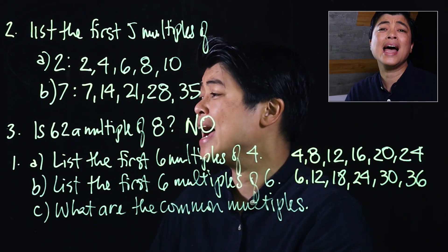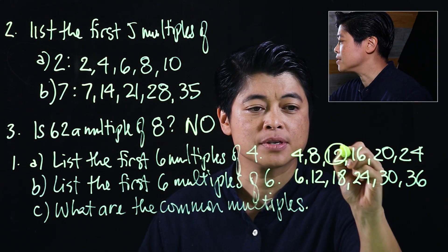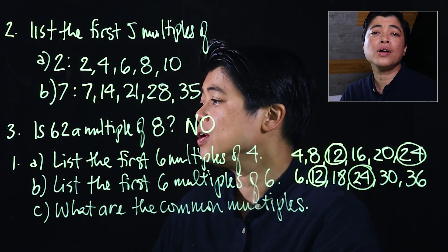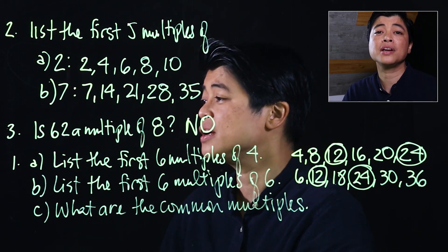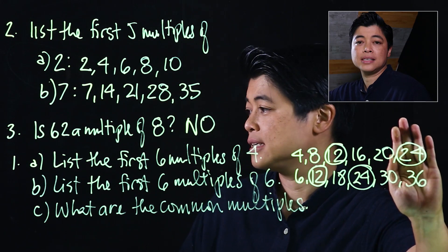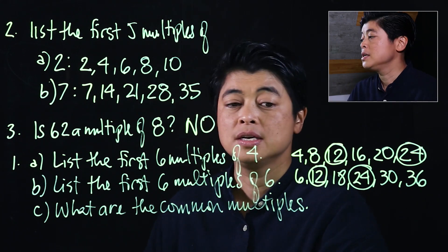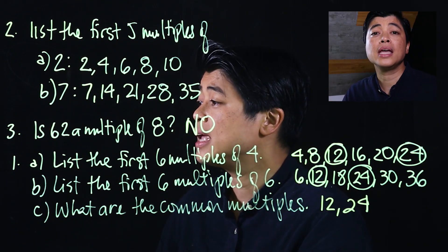Then it asks what the common multiples are. The common multiples are the ones that appear in both lists — that's 12 and 24. If schools start with zero as the smallest multiple, then zero would also be a common multiple and the list wouldn't reach as far. But for our case, the common multiples are 12 and 24. We need to know our multiplication tables well, so keep practicing.